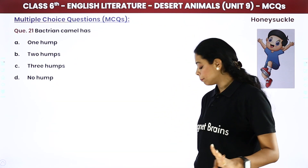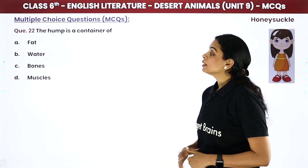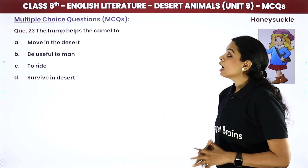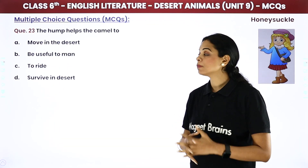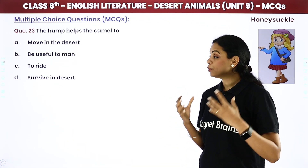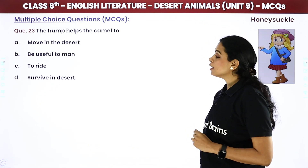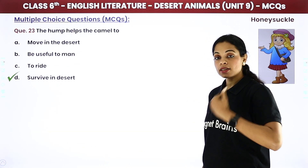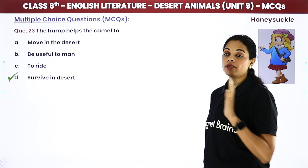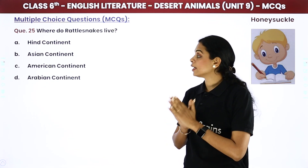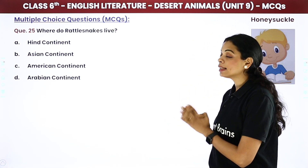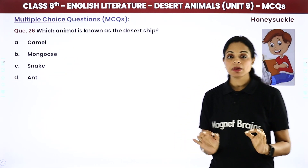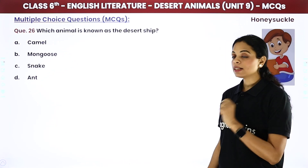Bactrian camel has — यह जो Bactrian camel होता है, इसके कितने humps होते हैं? Options: one, two, three, or none. The answer is: two humps. The hump is a container of — pure fat. The hump helps the camel to survive in desert — fat होती है, तो वो उसे use करके desert में survive कर सकता है। Rattlesnakes live in — American continent. Which animal is known as the desert ship? The answer is: camel.